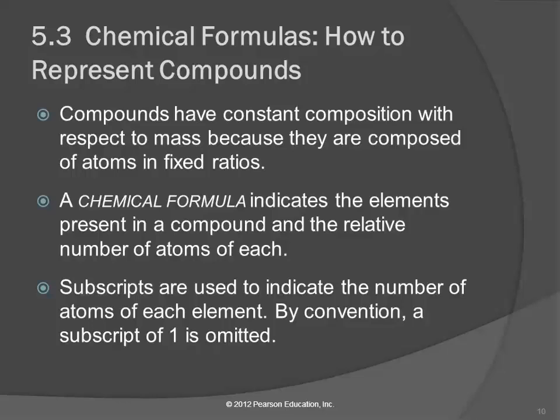The chemical formula is going to indicate the different elements that are present in that compound, and how many atoms of each element are present in one unit of that. So we use subscripts to indicate the number of atoms, and by convention, if we have a subscript of one, we don't write that.